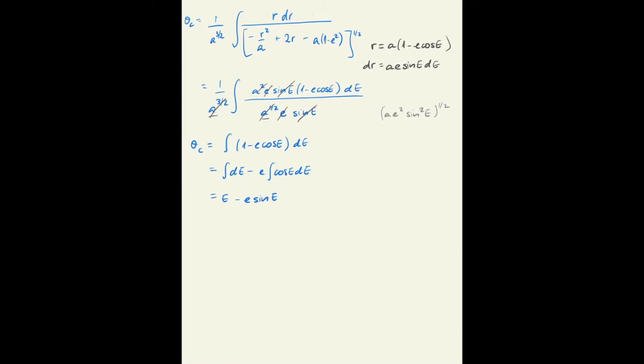You recognize that as the mean anomaly. So there we go, the last angle associated with the energy action is the mean anomaly. That completes the set of angle action variables for the Kepler problem.